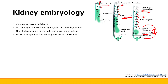The metanephric mesenchyme, like the mesenchyme tissue, is going to develop into parts of the kidney before the collecting ducts. That's why it's termed the mesenchyme. So that's it for embryology. Now we're going to talk about the pathology that happens in development.